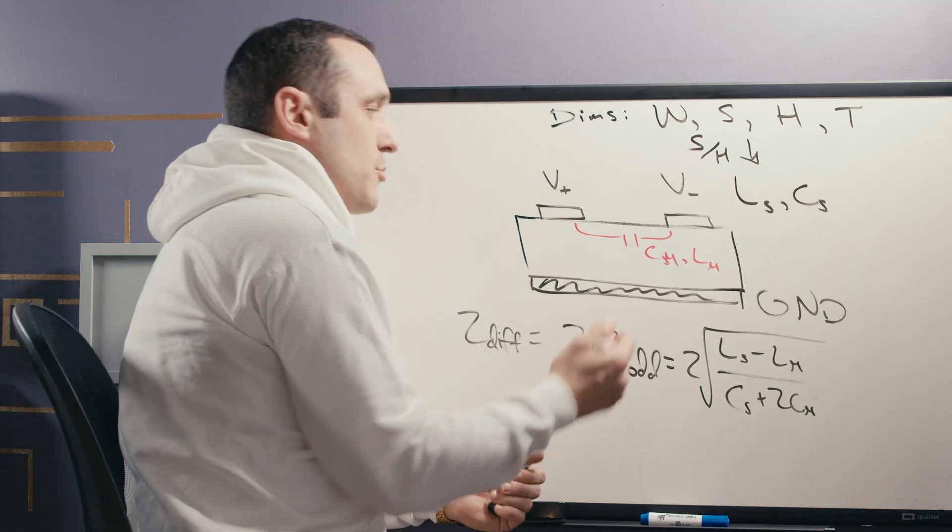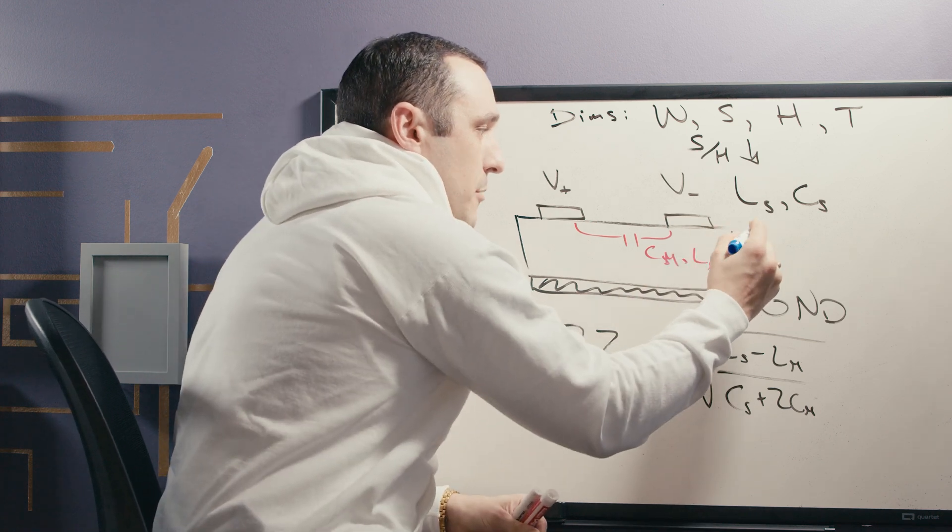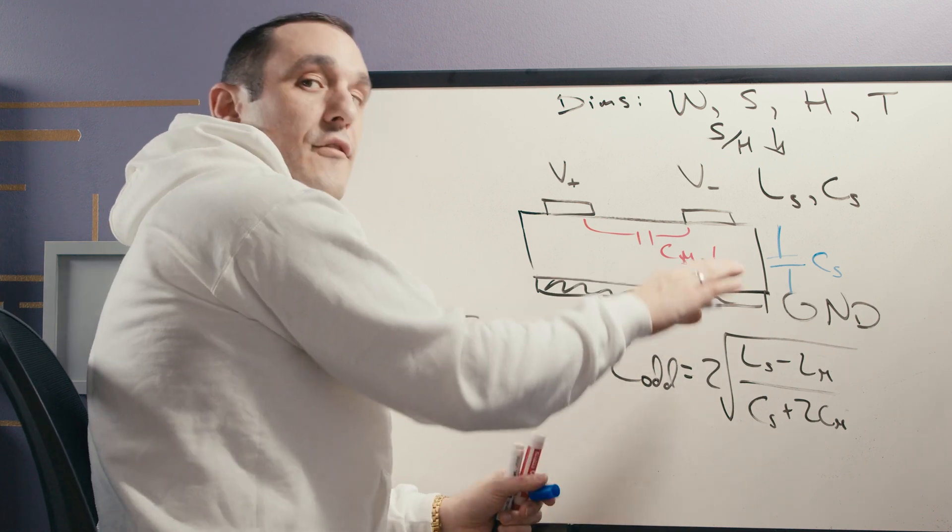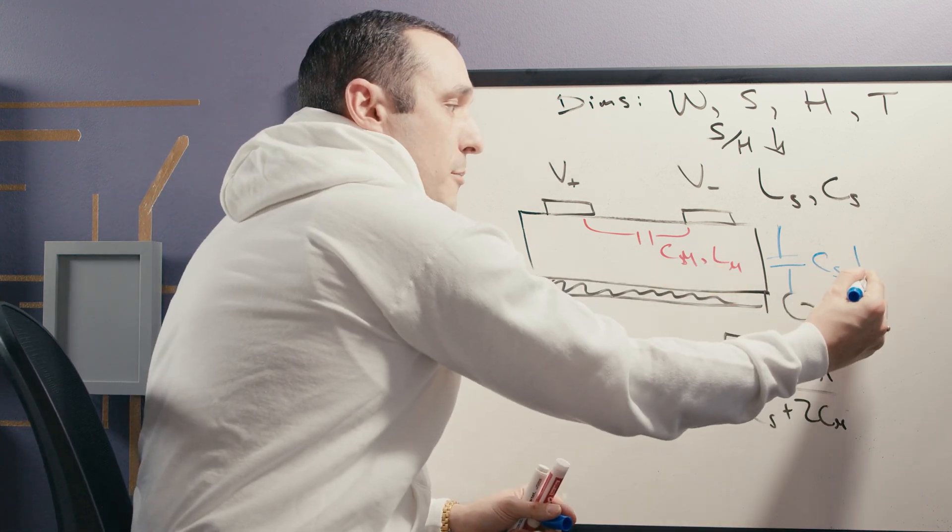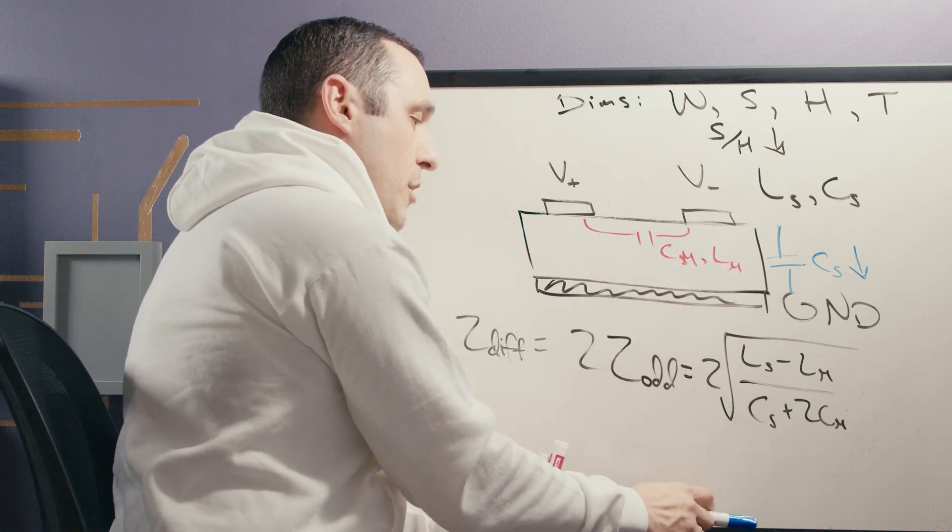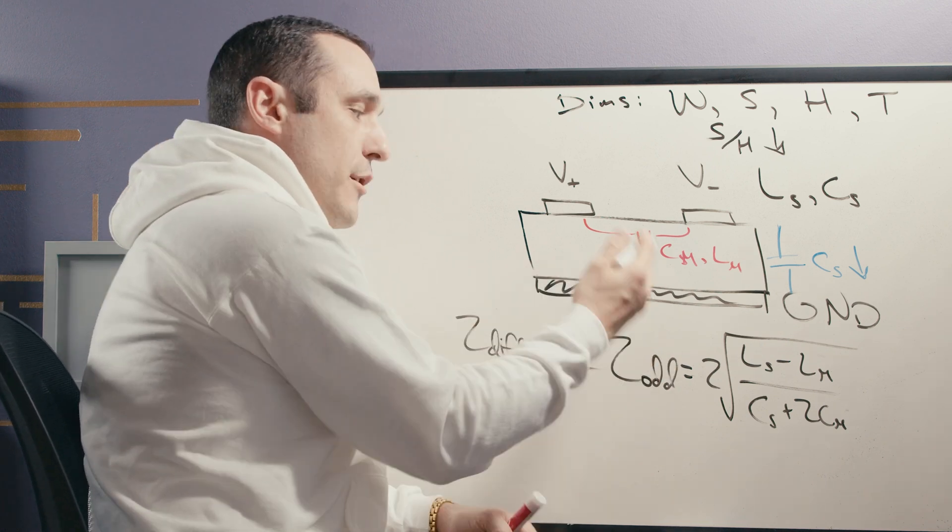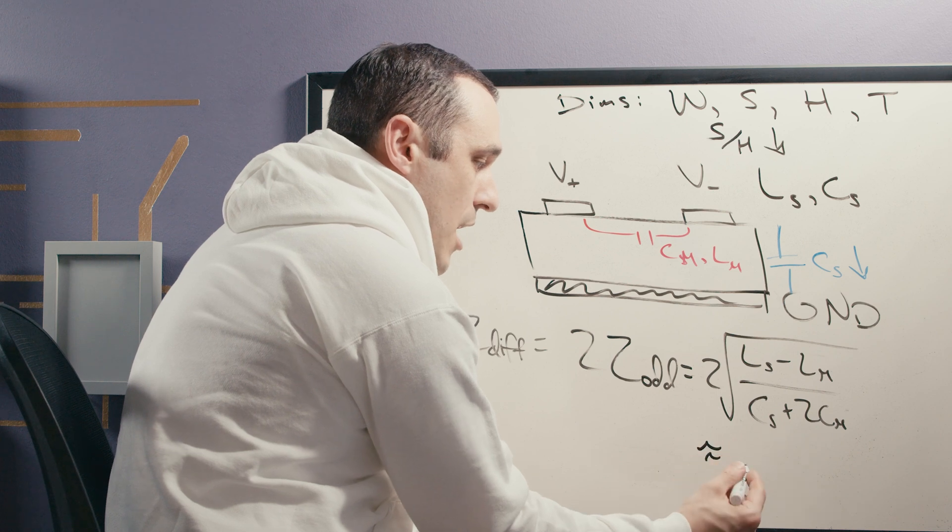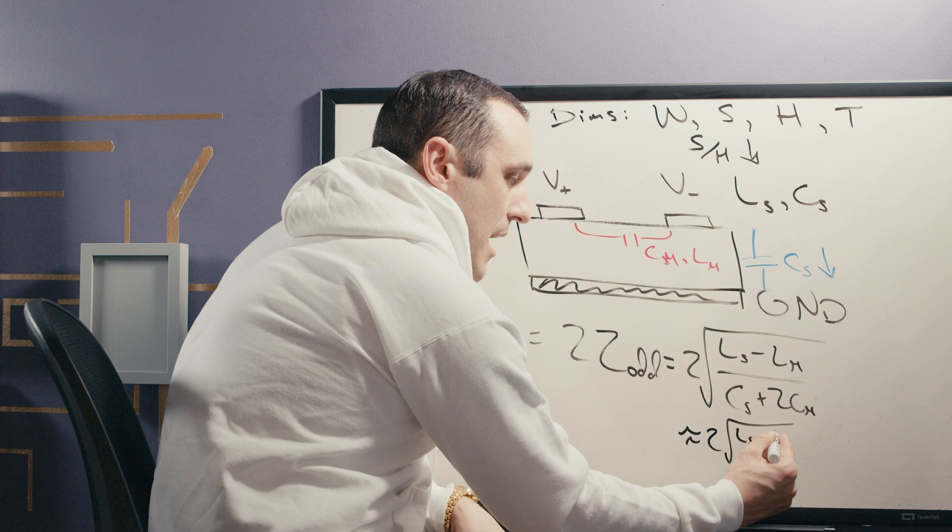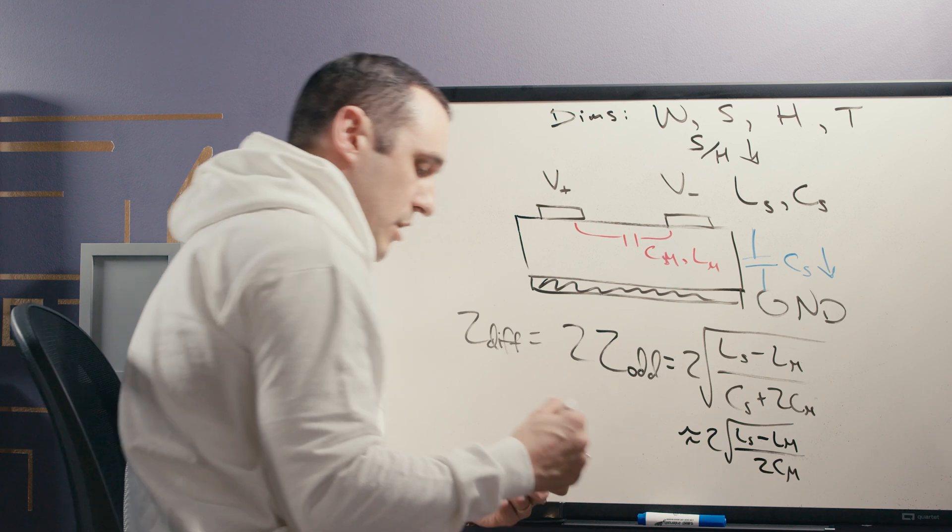Well in this case, what happens is we have a mutual capacitance between these two traces, but we also have a self-capacitance right here from each trace to ground. So when we take ground and move it very far away from the two traces, the self-capacitance starts to go down because we're increasing this distance. But this mutual capacitance probably stays the same or increases. And so in that case where we start to have very little influence from ground, we can almost approximate this as being two multiplied by some self-inductance minus some mutual inductance divided by approximately two times the mutual capacitance.